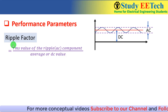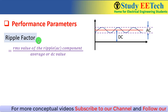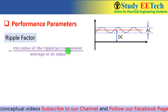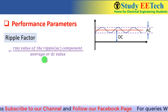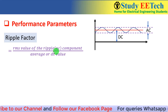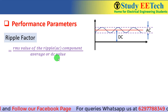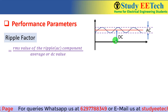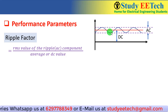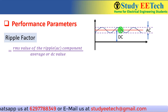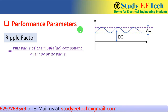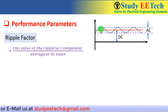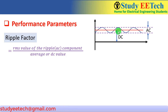The definition of ripple factor is the RMS value of the ripple component divided by the average or DC value. Average and DC are synonymous here. So to calculate the ripple factor we calculate the RMS value of the AC part, and that RMS value of the AC part divided by the DC value gives the ripple factor.